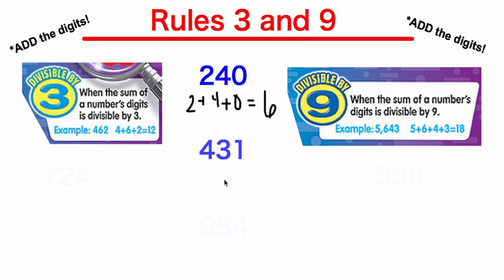Let's look at another number: 4,131. We add the digits — 4 plus 1 plus 3 plus 1 is 9... wait, let me recalculate: 4 plus 3 is 7, plus 1 is 8. Can 3 evenly go into 8? No, so this number is not divisible by 3. Can 9 evenly go into 8? No, so this number is not divisible by 9.